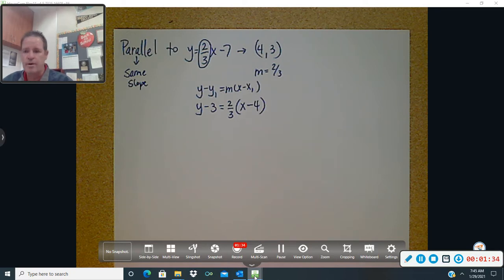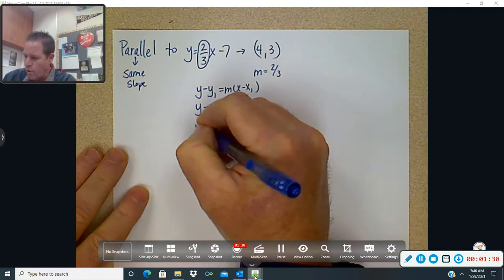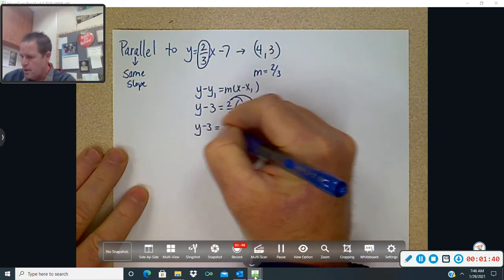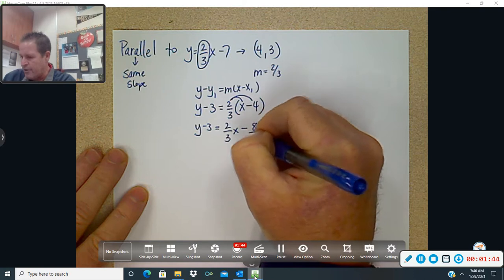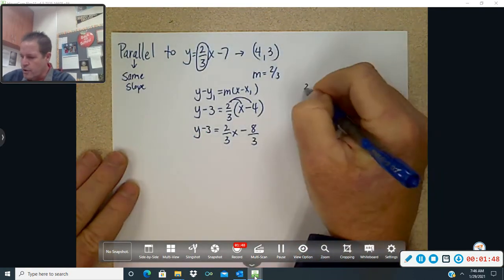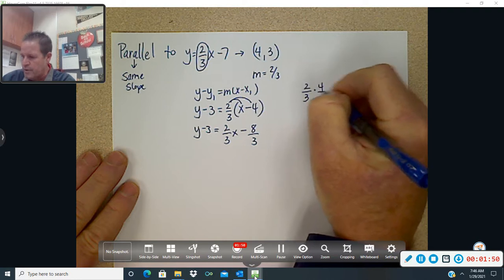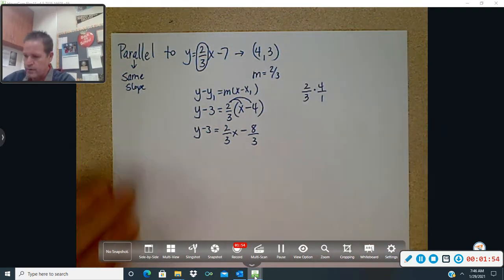And now you have point slope form. Now, to get it in a slope intercept form, you need to distribute. So you're going to have y minus 3 equals 2 thirds x minus 8 thirds. Okay, and if you're having trouble doing that distributing there, you can just over to the side do 2 over 3 times 4 over 1, and you will get 8 over 3.